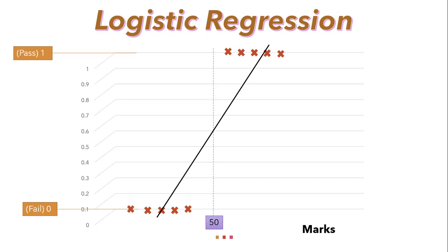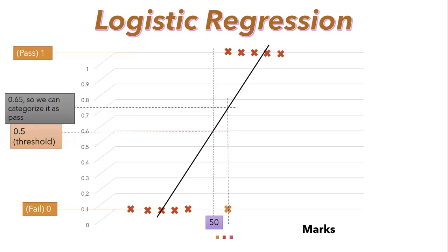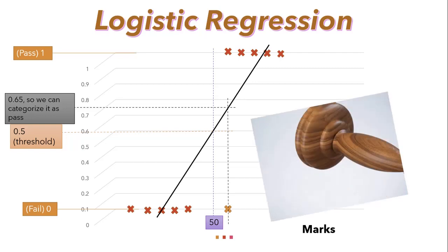Now to make a prediction, we may say that for any given marks x, if f gets more than 0.5 we predict that as pass, otherwise we predict as fail. Suppose this is the point of our prediction and if I draw a line from this point to the straight line, it will come at 0.65 — which is more than 0.5 — so we can predict it as pass. Looks like this way we could correctly predict every single training set sample.